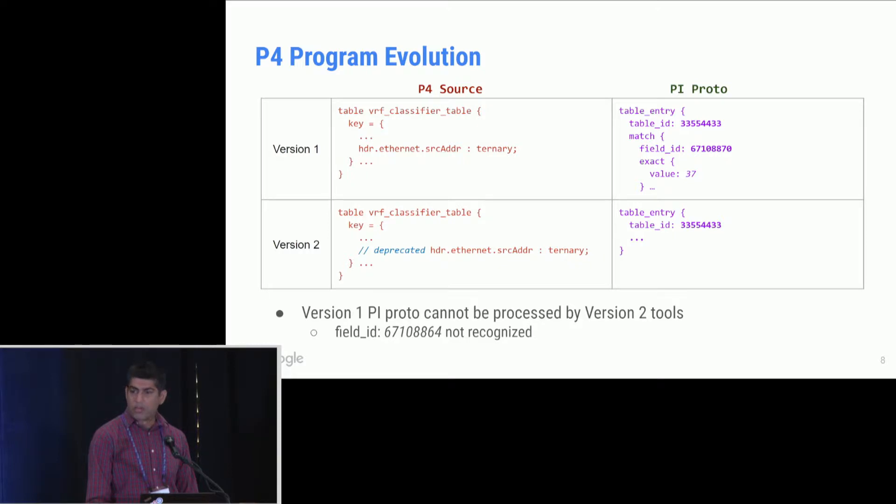One other concern is about versioning as the P4 program itself evolves. So imagine at version 2 we no longer wanted to match on Ethernet source address and we therefore remove it from the match fields. We then go ahead and rebuild all our applications and tools. Now also imagine that we have some version 1 PI proto traces lying around and we now want to analyze them. Well, we would no longer be able to do that very easily if we use the latest log analysis tool because it would now not be able to recognize the field ID associated with the match field that we just removed. So you'd have to build some sophisticated versioning control into your apps and all the tools. At this point, I would like to hand over to Samar to talk about a proposal to address these concerns.